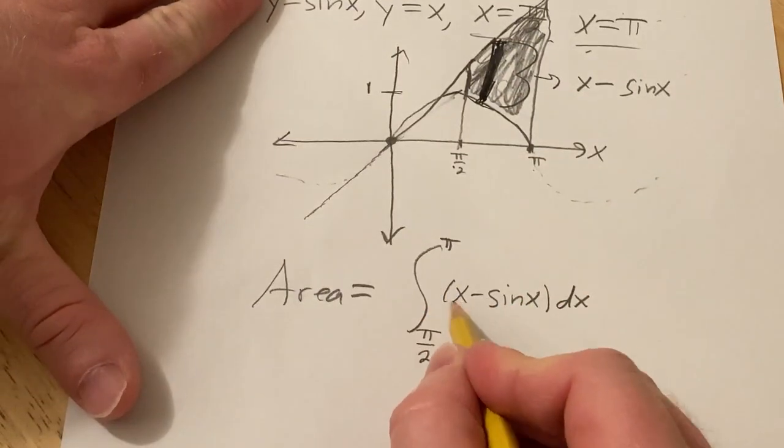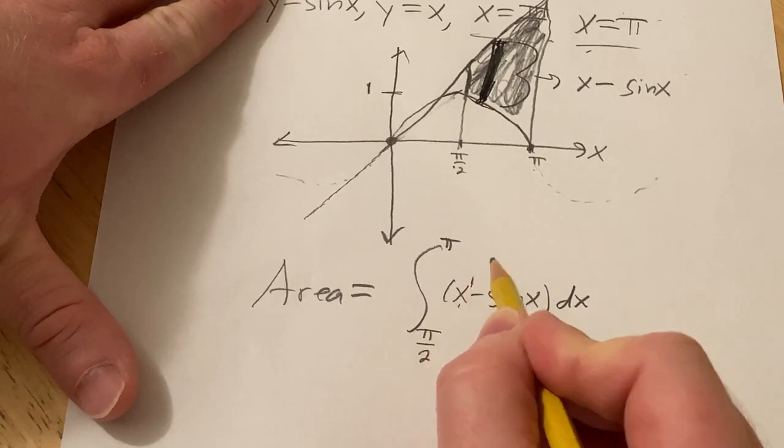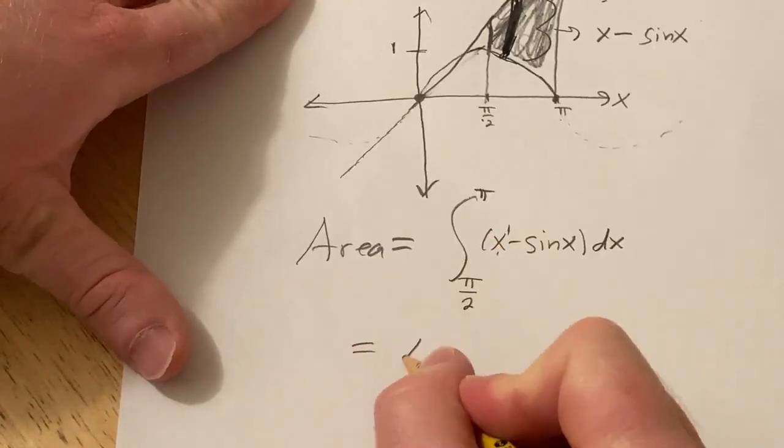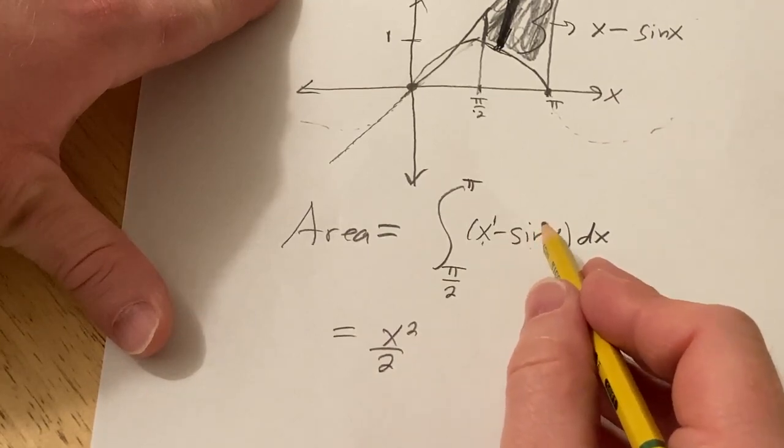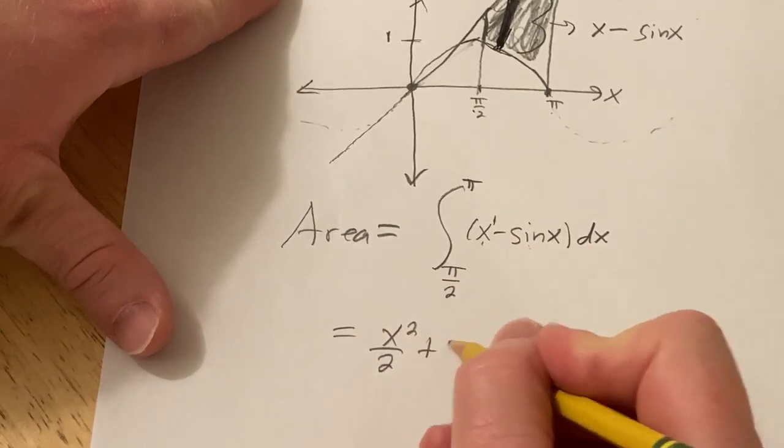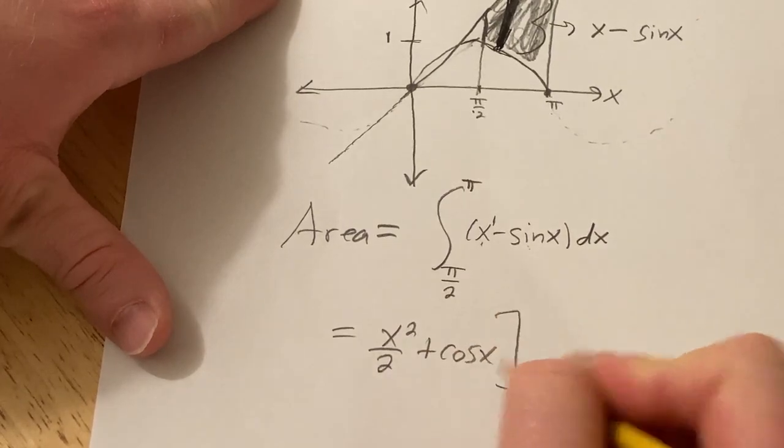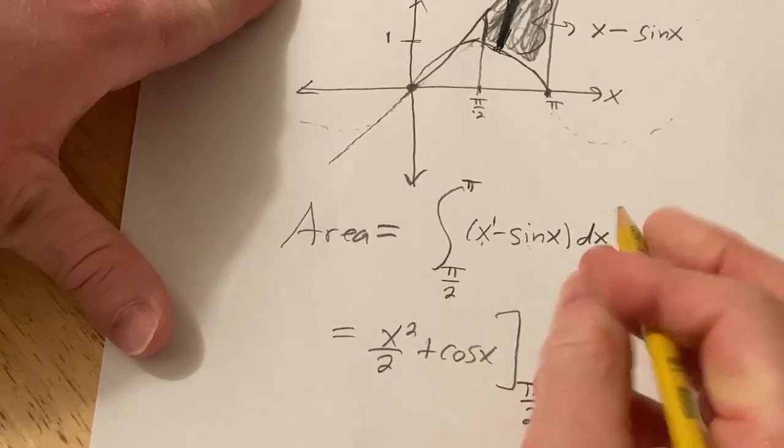So integrating this, pretty simple, integrate x, we use the power rule. So we add one and divide. This is x squared over 2. Integrating negative sine, the derivative of cosine is negative sine. So this is plus cosine. And we're going from pi over 2 to pi.